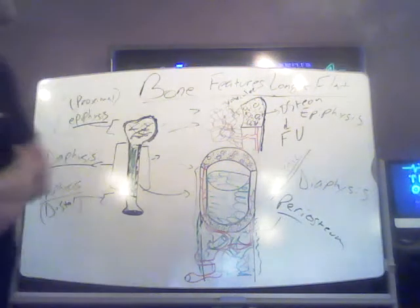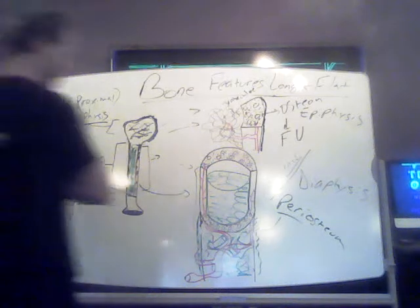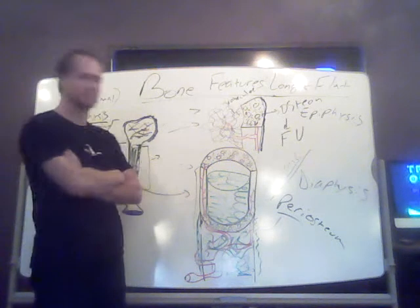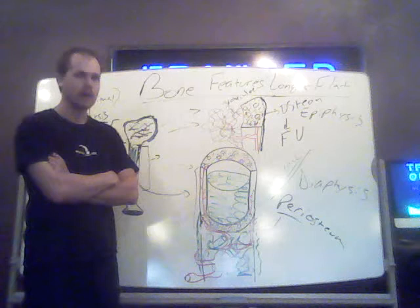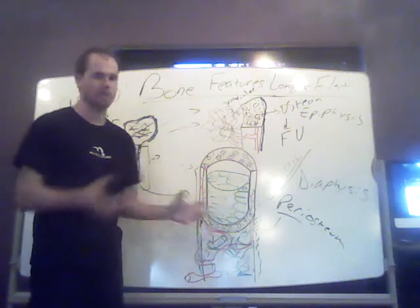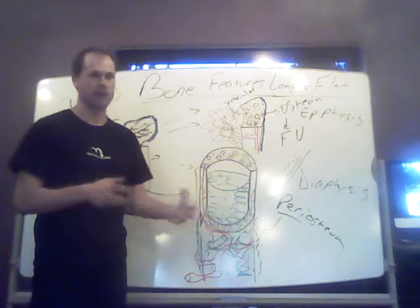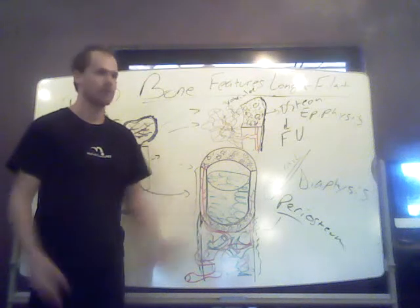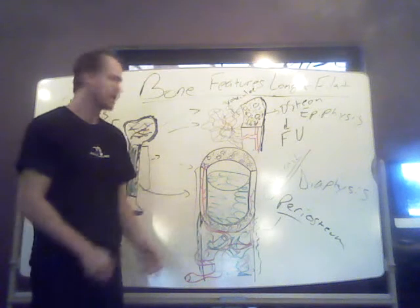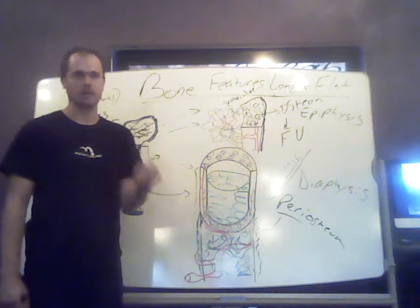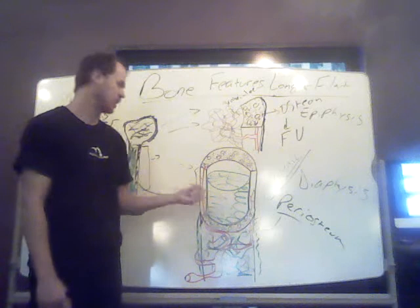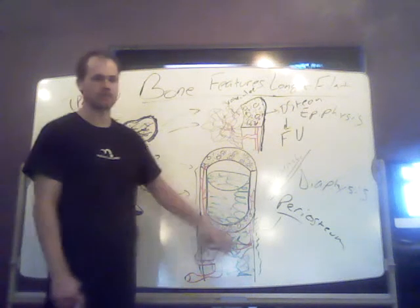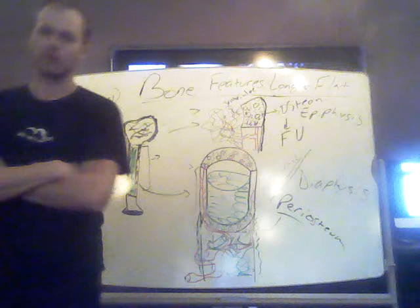The periosteum is how the bone gets its nourishment from the circulatory system and how nerves get into the bone itself. That's why when you look at a bone coming out of a fresh body — whether it's a chicken, a human, a cadaver — bones don't look just pure white. They have kind of a yellowish-greenish tinge to them, and that's because of the periosteum around the outside of the bone.